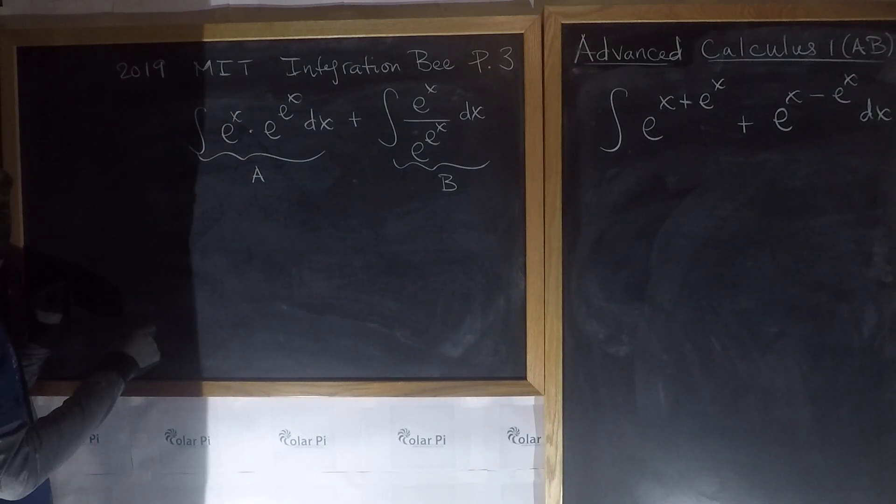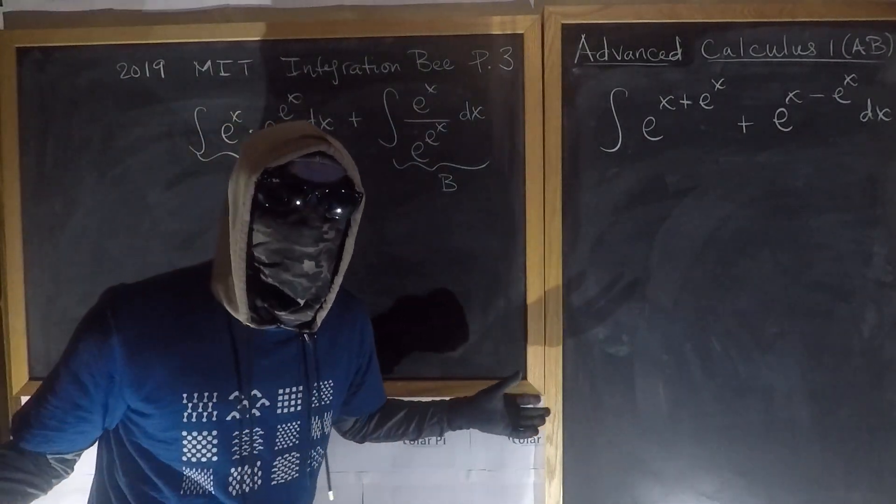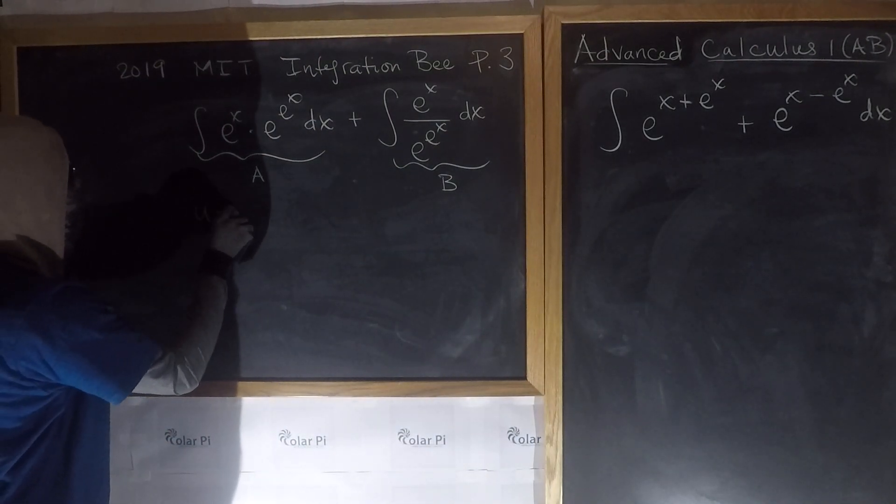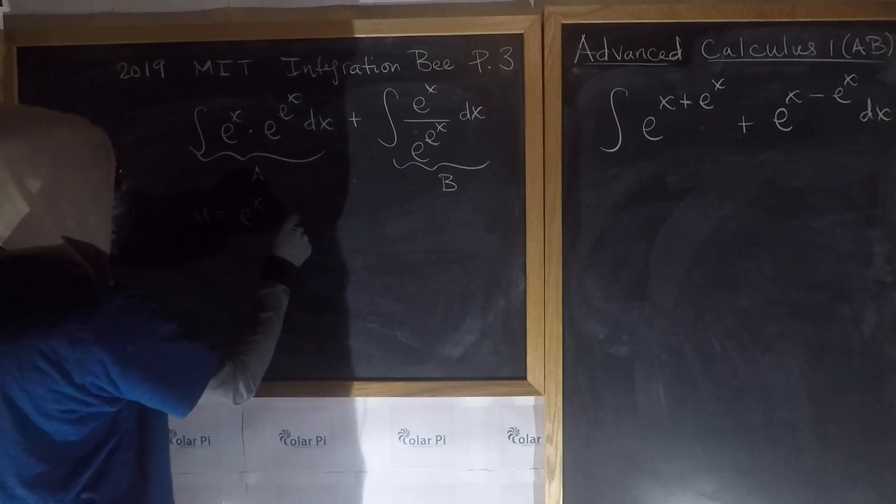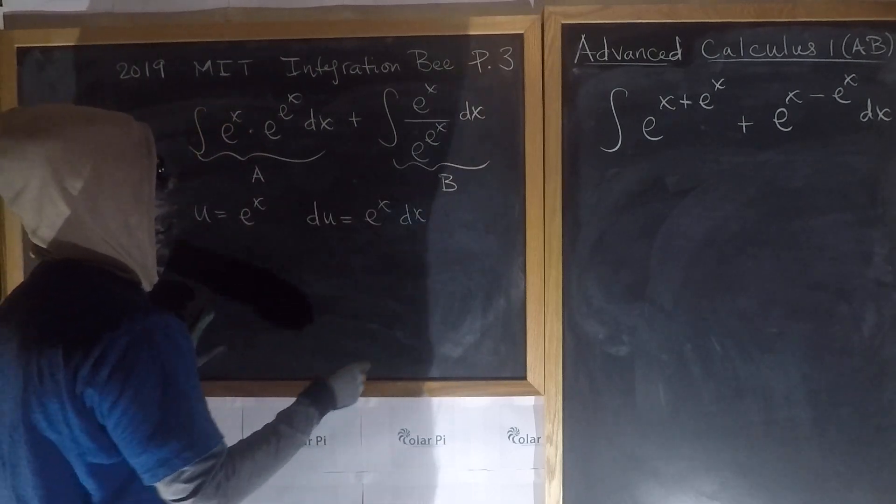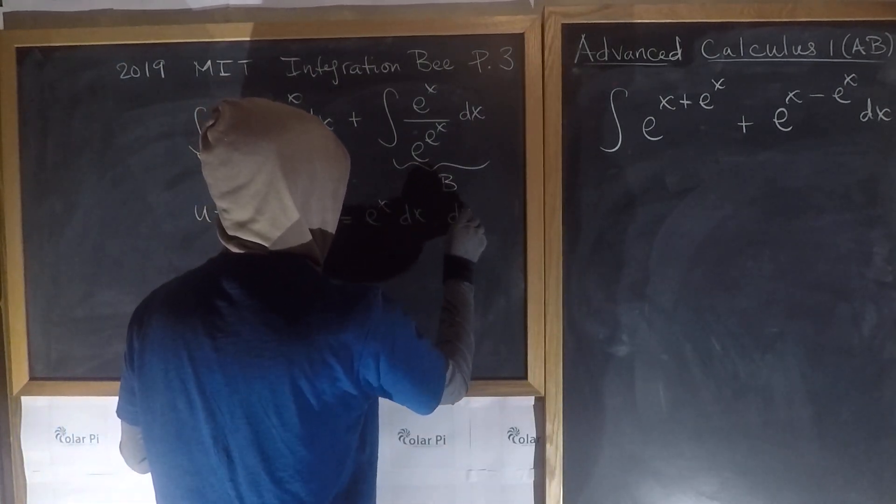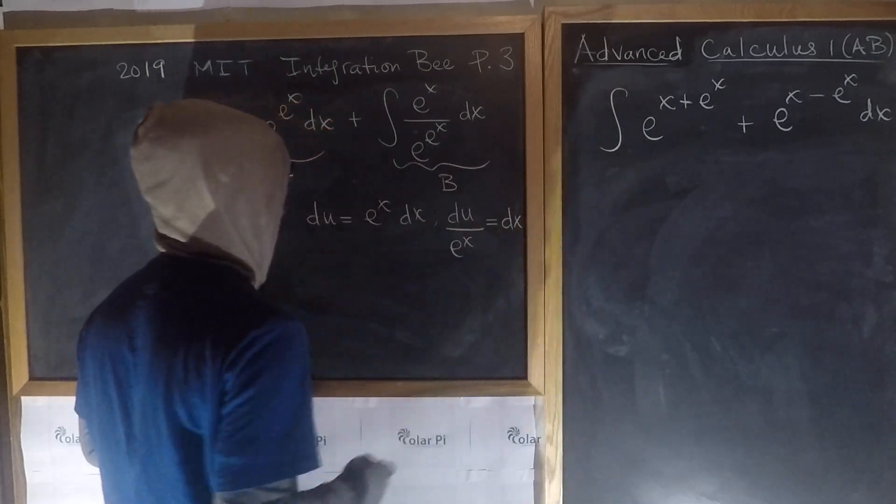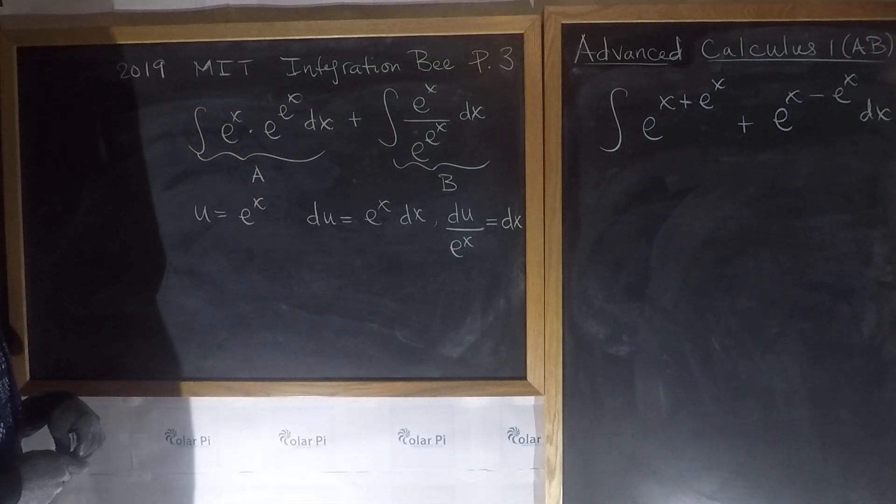So first for A, again, we're going to think u substitution. So if we let u equal e to the x, then du is, from which we gather that du over e to the x is equal to dx.